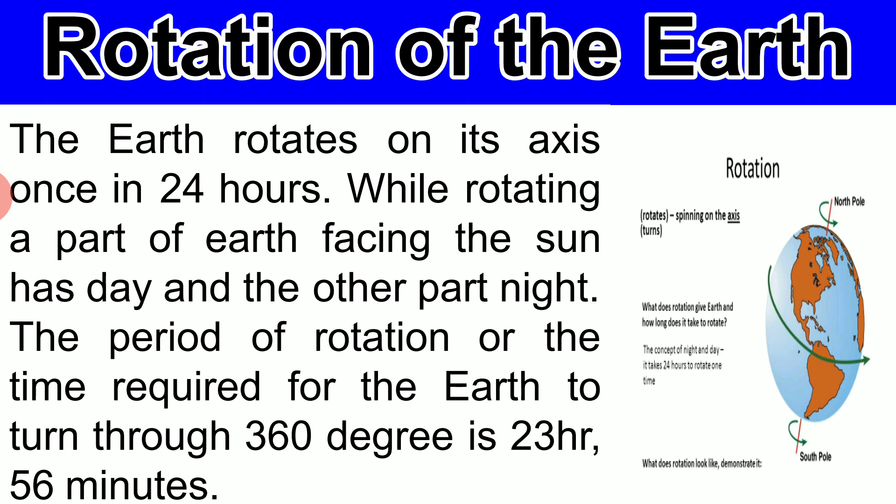The earth rotates on its axis from west to east once in 24 hours, meaning earth takes 23 hours, 56 minutes, 4 seconds to complete one rotation. This movement causes day and night.